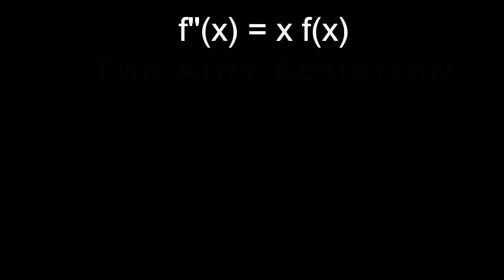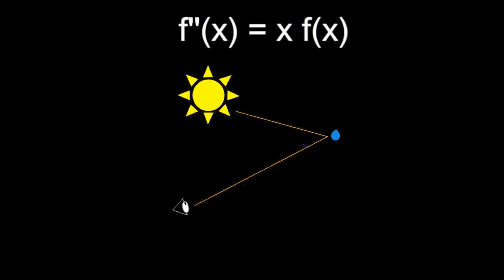In it, x represents roughly speaking the angle between the sun and your eyes formed as a water droplet suspended in the air. And f of x represents the light intensity when this angle is x.